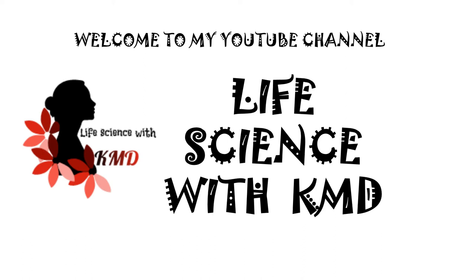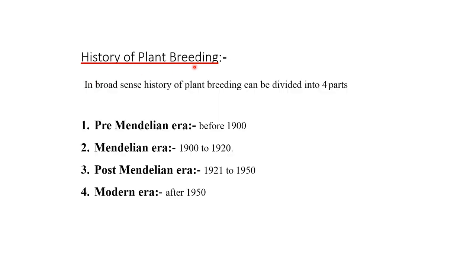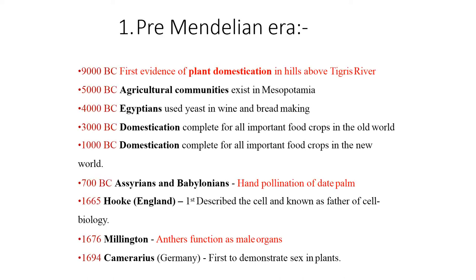Welcome to Life Science with KMD. Today I'm going to explain the history and objectives of plant breeding. The history of plant breeding is divided into four parts: the pre-Mendelian era (before 1900), the Mendelian era (1900 to 1920), the post-Mendelian era (1921 to 1950), and the modern era (after 1950).